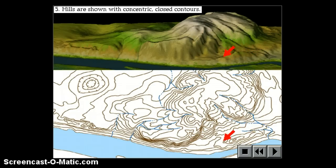Rule number five, hills are shown with closed concentric contours. So, when you have a loop inside of a loop inside of a loop, that's an indication of a hill. And the arrow up here is kind of showing you why that would be. If I stayed at the same elevation, I would loop around that hill. I would never take a step up. I would never take a step down.